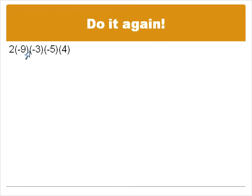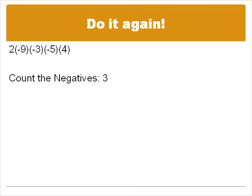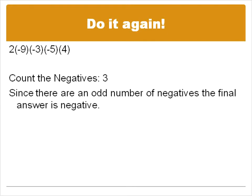Let's do another one. We have two times negative nine times negative three times negative five times positive four. There are one, two, three negatives — that's our first step, we count them. Three negatives. Because it's an odd number of negatives, the final answer is going to be negative. Now all we need to do is multiply it like it's positive and then apply that negative at the end.